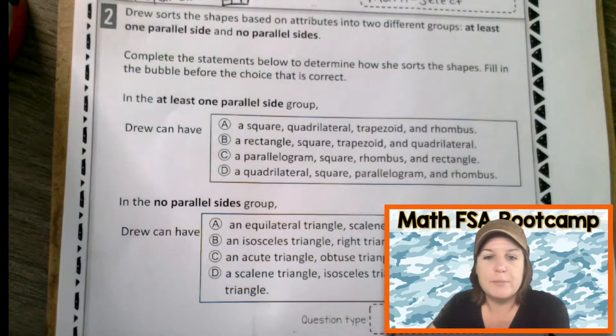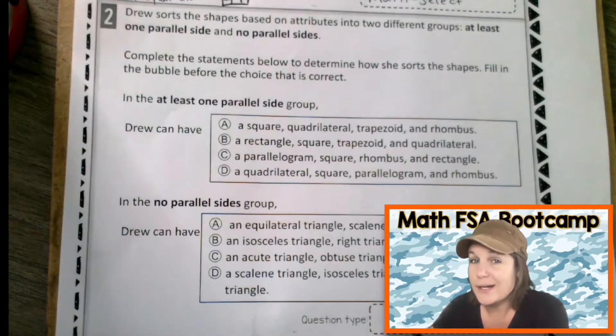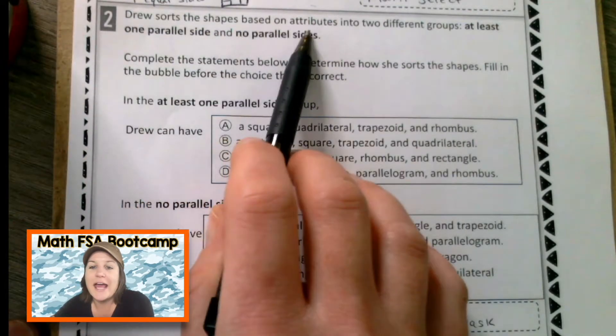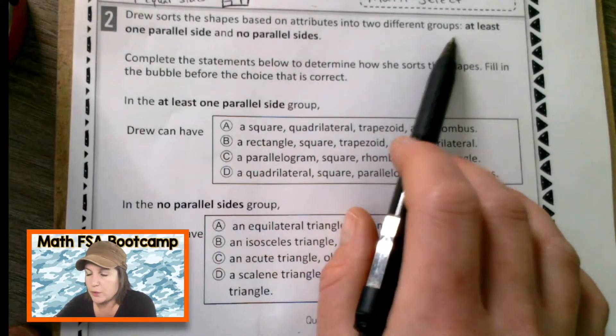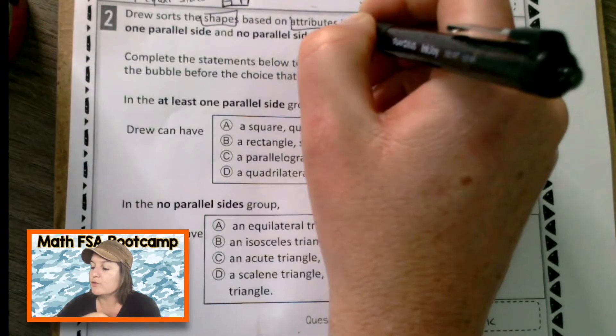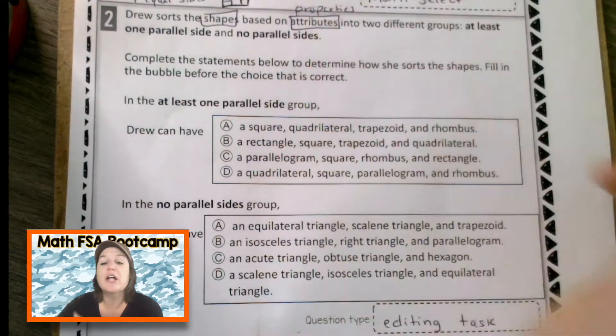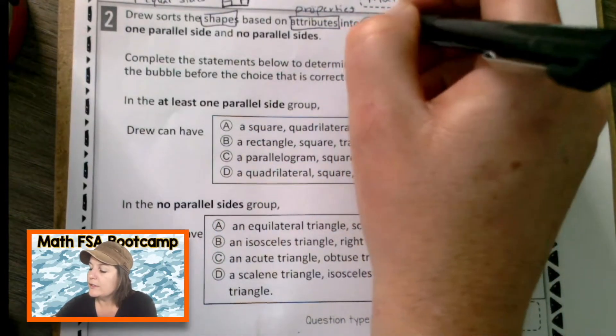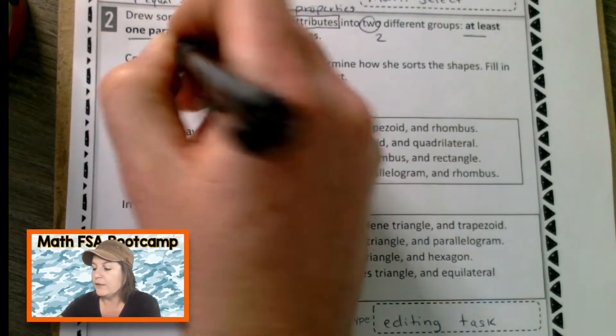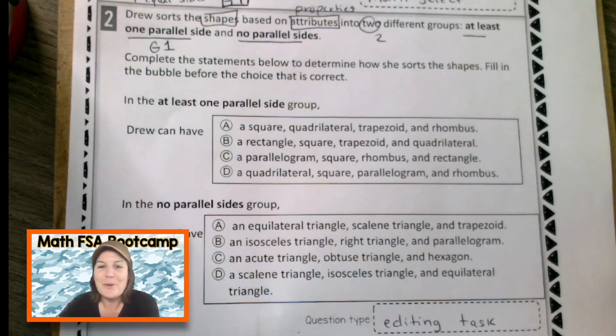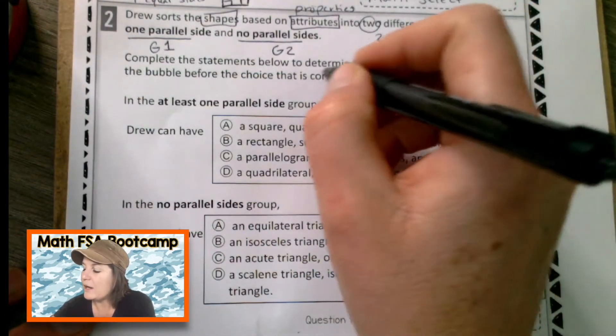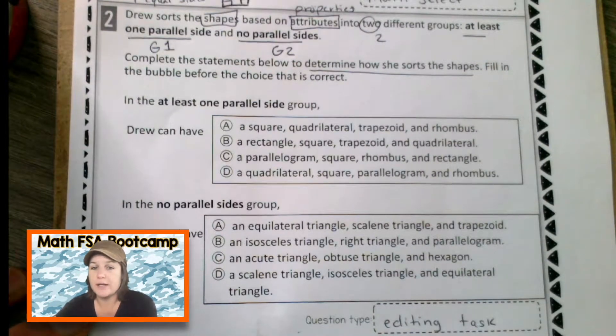Alrighty. Number two, question type. Well, it looks like we have statements with answer choices. So what kind of question is this? It is an editing task. All right. This says Drew sorts the shapes based on attributes into two different groups. Okay. That's fancy words in there. So somebody named Drew sorts shapes based on the attributes or like their properties, just how you describe it. Like parallel lines would be an attribute or the types of angles would be the attribute into two different groups. And those two groups are at least one parallel side, that's group one, or no parallel sides. That would be group two. So complete the statements below to determine how to sort the shapes. Fill in the bubble before the choice that is correct.